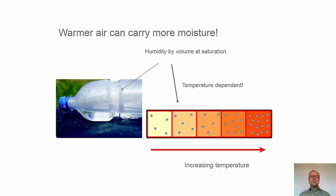After some time you get so many water vapor molecules up in the air that some will go back to the water again. And after some time you get an equilibrium and you get a stable amount of water vapor in the air, and we call this the humidity by volume at saturation.